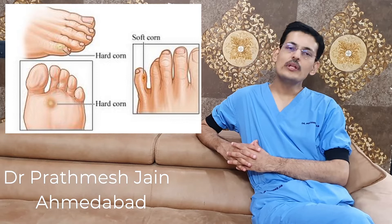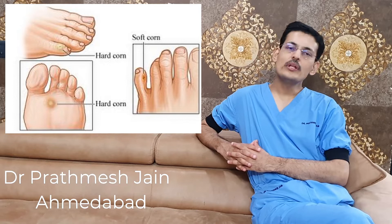Now coming to the reasons why they happen. The most common reasons are extrinsic causes such as bad footwear — poor footwear, tight shoes, open shoes, or irregular kinds of shoes are the most common extrinsic causes of corns. There can also be intrinsic reasons.